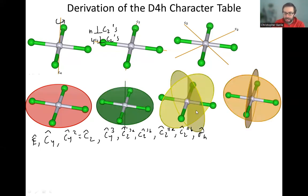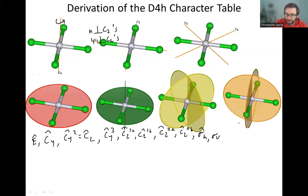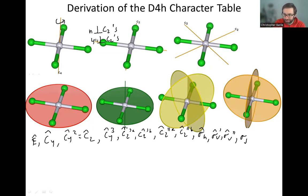We also have two sigma Vs and sigma Ds. The sigma Vs are the ones going through the bonds — we can call them sigma V prime and sigma V double prime. This mirror plane coming out towards us takes this atom to that atom; this mirror plane going across cuts through the molecule. Those are vertical mirror planes because they cut through the bonds. We also have sigma Ds, the yellow ones — sigma D prime and sigma D double prime. All the mirror planes go through the center, so it doesn't do anything to the central atom.